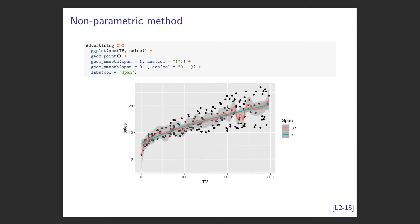LOESS has a parameter called span - roughly the size of the window used to fit each piece. With a span of 1, it fits the data looking very similar to the parametric form - not too wiggly. With a span of 0.1, it takes small bits and fits them together and becomes very wiggly. Non-parametric is great for seeing relationships but doesn't give much explanation - good for prediction, not for explanation. You start to see that trade-off.